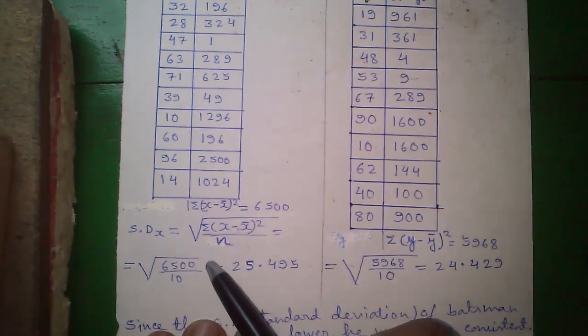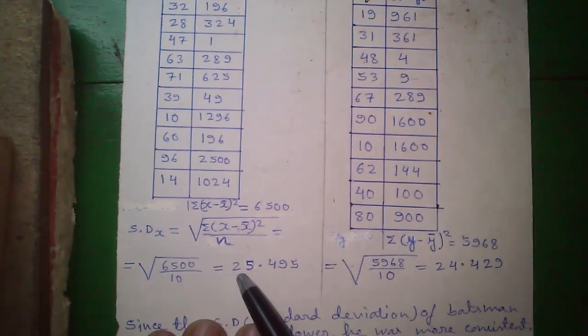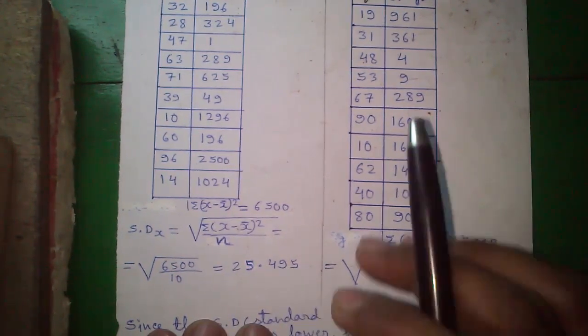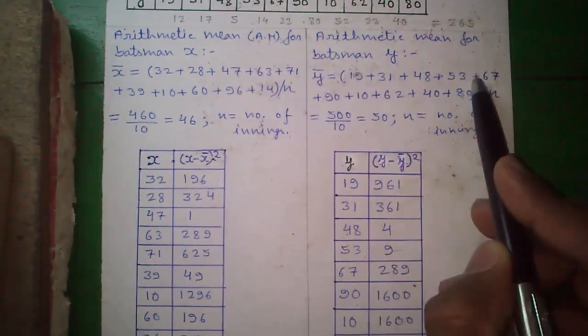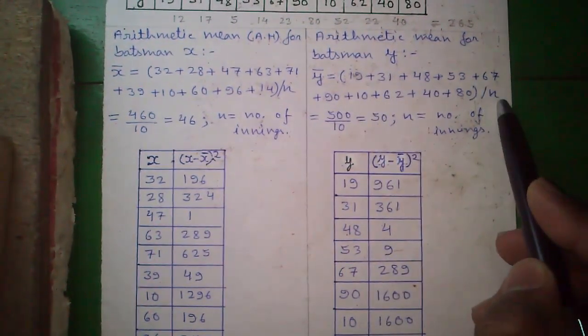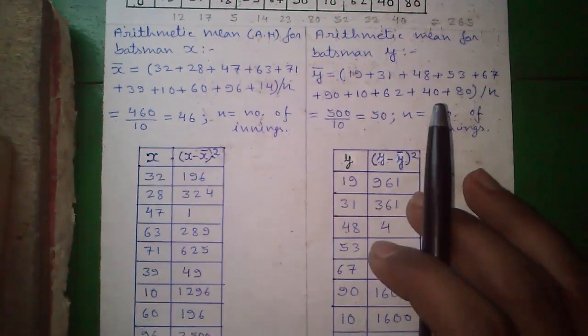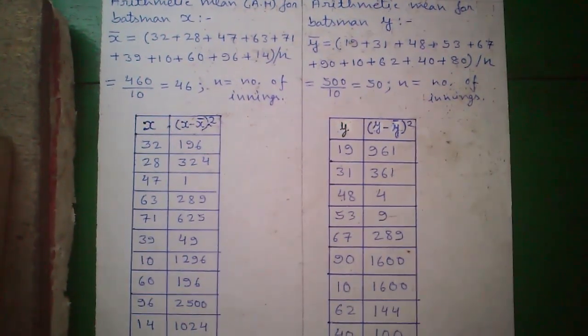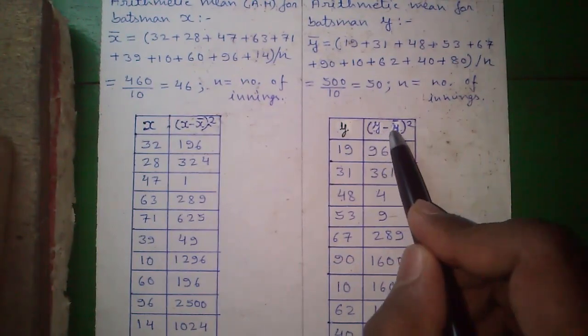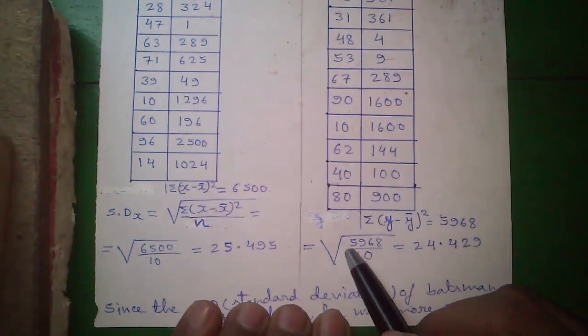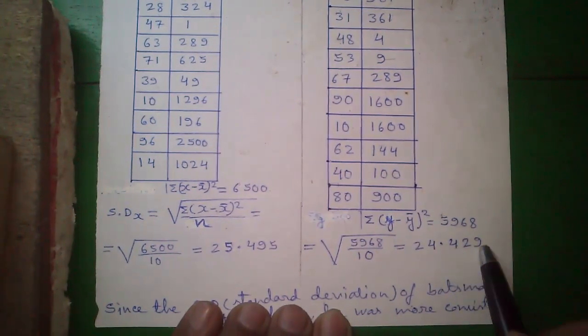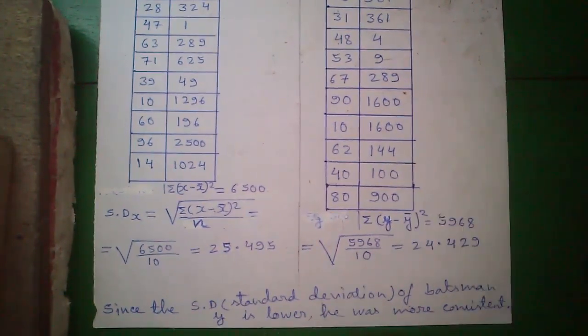For Y, same process. Y bar equals to sum all Y values divided by 10 which is 50. And then write all Y values in the left column and the right column Y minus Y bar whole square. Same process also for Y. So, standard deviation for Y is 24.429. This was using detail method.